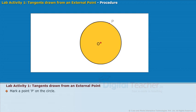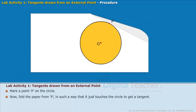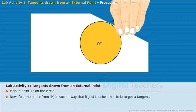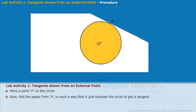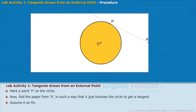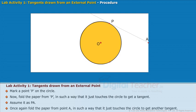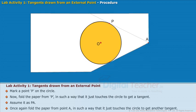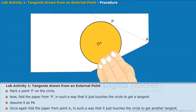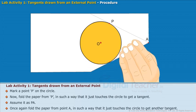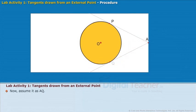Mark a point P on the circle. Now, fold the paper from P in such a way that it just touches the circle to get a tangent. Assume it as PA. Once again, fold the paper from point A in such a way that it just touches the circle to get another tangent. Assume it as AQ.